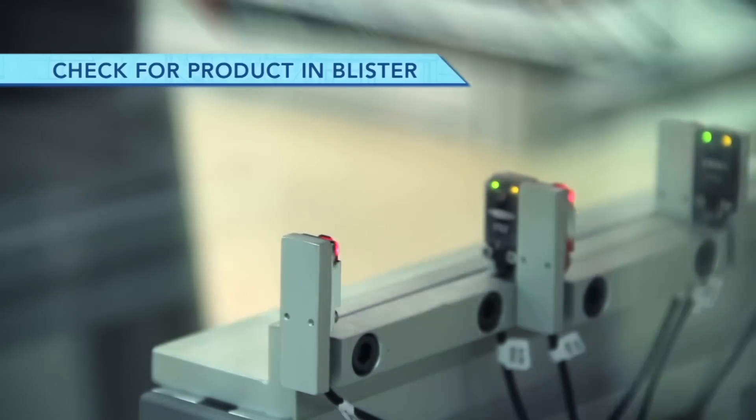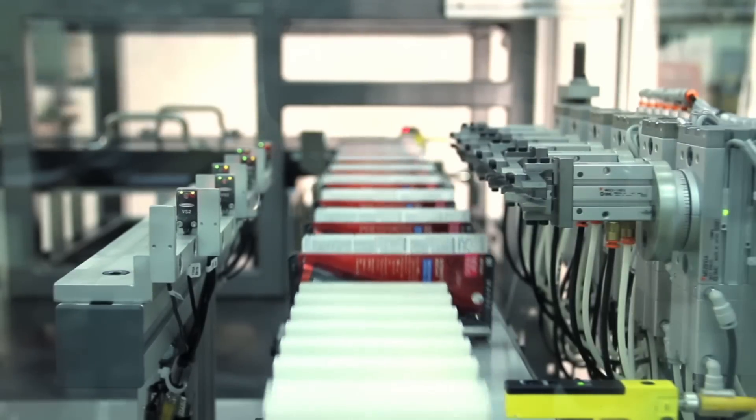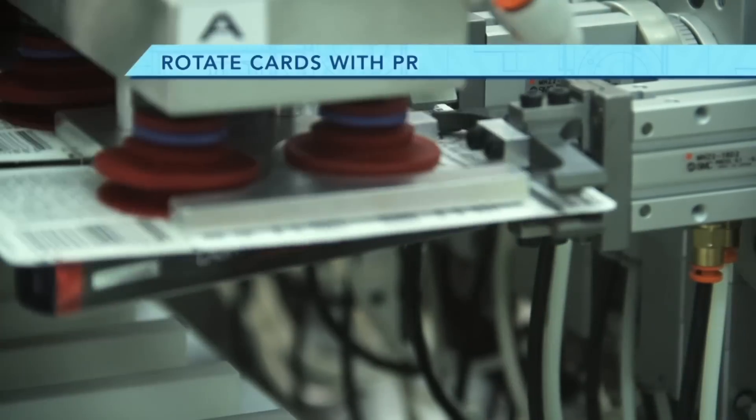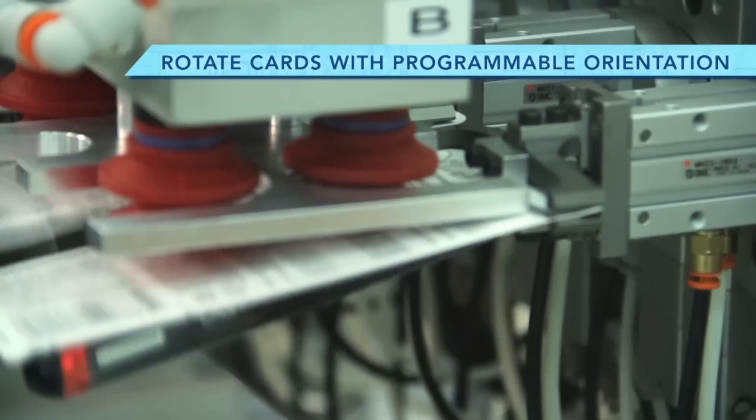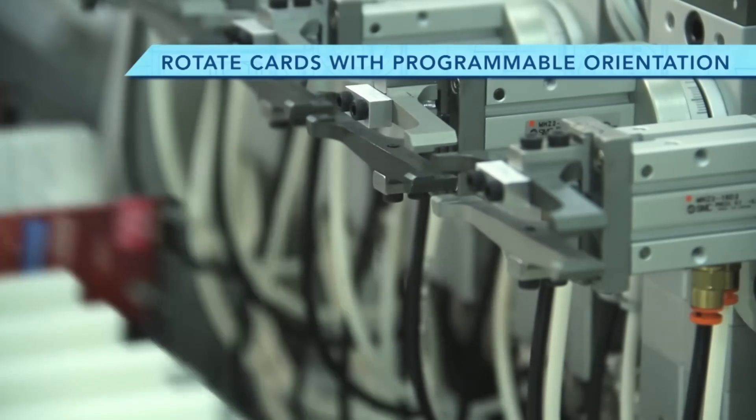The FANUC M10IA robot then hands off each row of cards to a flipper station where a flipper rotates six cards at a time to the customer's desired pack pattern.